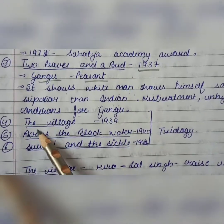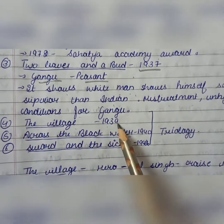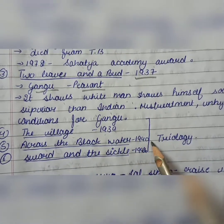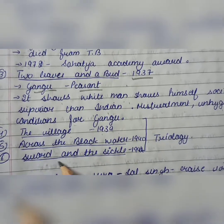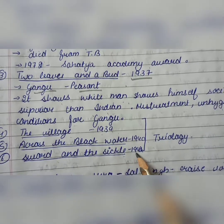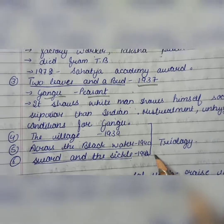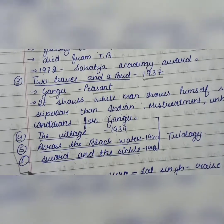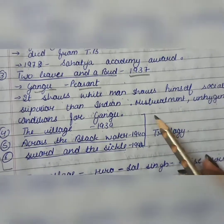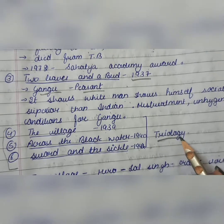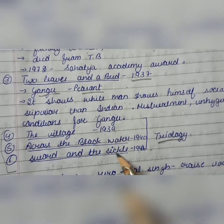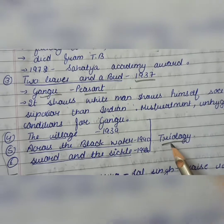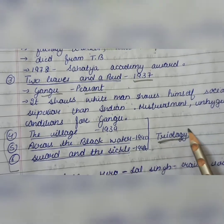Next works are The Village, published in 1939; Across the Black Water, published in 1940; and Sword and the Sickle, 1942. These are very, very important. They form a trilogy by Mulk Raj Anand — these three works are connected, and that is why they are known as a trilogy.